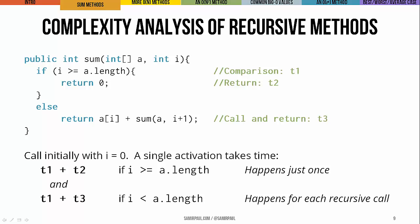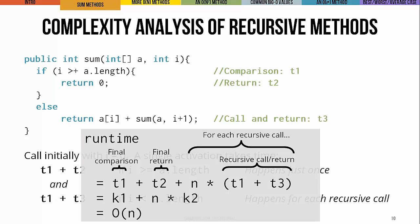If we call this method initially with i equals zero, a single call takes T1 plus T2 — the comparison plus the return — when i is greater than or equal to the length, and T1 plus T3 — the comparison plus the call and return — when i is less than the length. The first case happens just once (the base case), and the second case happens a.length times as the method calls itself recursively. Setting n to be the length of the array, we end up with T1 and T2 combining to a constant we ignore, leaving us with the linear expression n times k2. This tells us the recursive sum is also a linear order algorithm.